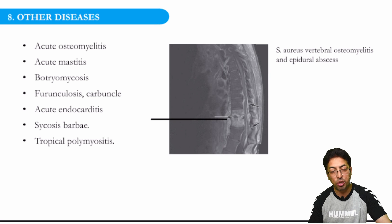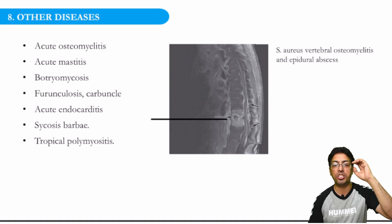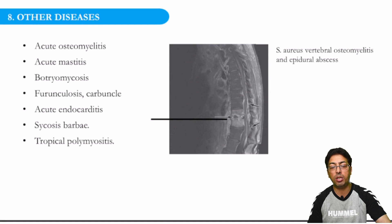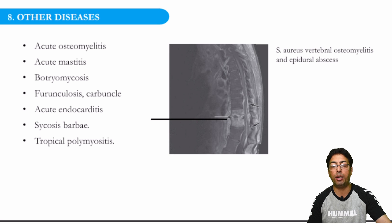So we are done with acute osteomyelitis, acute mastitis, Botryomycosis, furunculosis, and carbuncle. Now, sometimes a patient can present very sick with a condition called acute endocarditis — inflammation of the valves of the heart. Sub-acute endocarditis has Streptococcus as the most common organism, but acute bacterial endocarditis — ABE, not SABE — is one in which the patient progresses very rapidly towards deterioration. It should be identified at an early stage, and the most important organism causing acute bacterial endocarditis is Staph aureus.